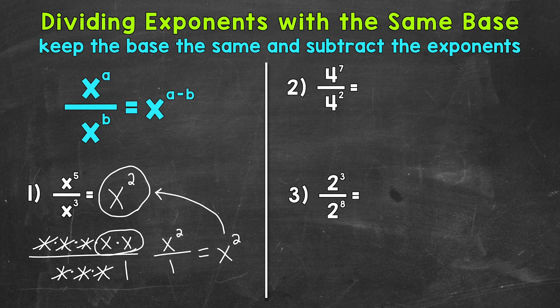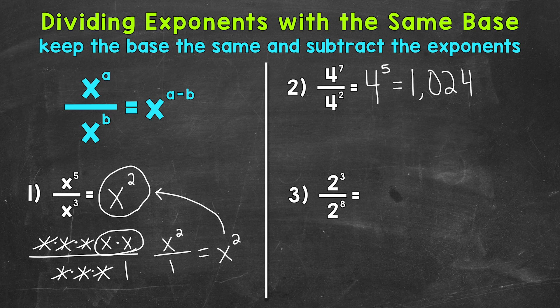Let's move on to number 2, where we have 4 to the power of 7 divided by 4 squared. Keep the base of 4 the same, and then subtract the exponents. So 7 minus 2 gives us an exponent of 5. So 4 to the power of 5, and that equals 1024. That's our final solution for number 2.